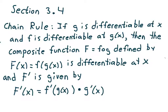This is a video from section 3.4. We're going to look at the chain rule. If g is differentiable at x and f is differentiable at g of x, then the composite function capital F, which equals f composed with g, defined by capital F of x equal to f of g of x, is differentiable at x. Capital F prime is given by F prime of x equals f prime of g of x times g prime of x.